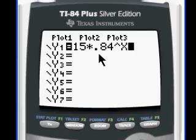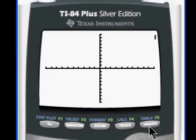We know that this is going to be a decay exponential function because our term right here, 0.84, is between 0 and 1. So let's take a look at it. We hit the graph button and we don't see very much of the function.